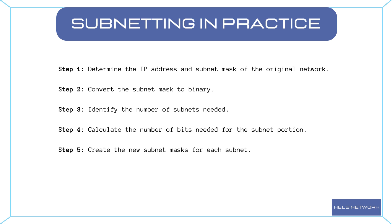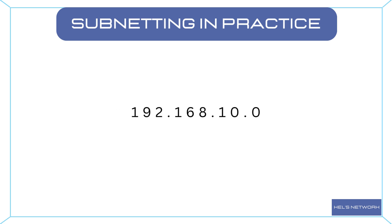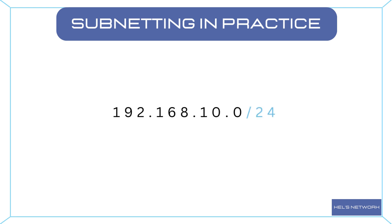Let's walk through an example to solidify our understanding. We have a Class C network with the IP address 192.168.10.0 and a subnet mask of 255.255.255.0. We want to create four subnets. The subnet mask /24 indicates that the first 24 bits of the IP address are reserved for the network portion, leaving 32 minus 24 equals 8 bits for the host portion.